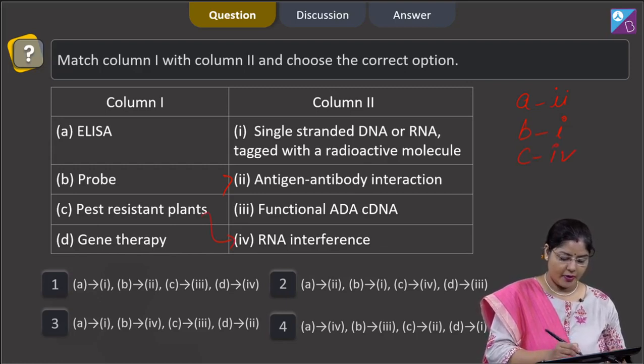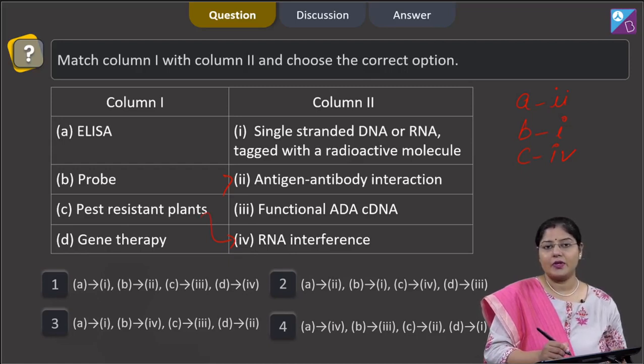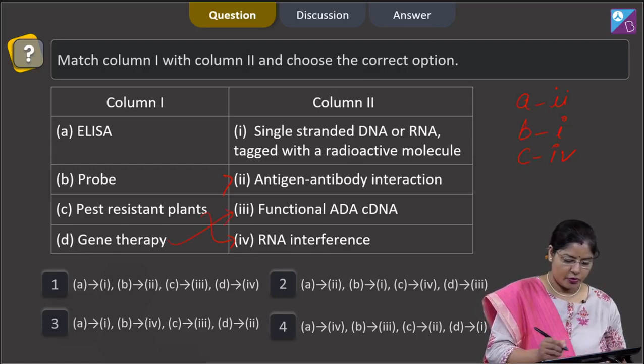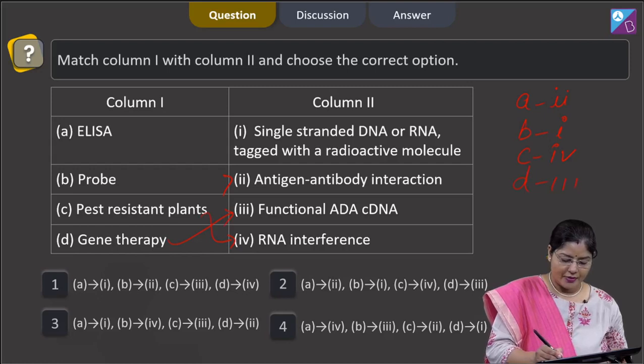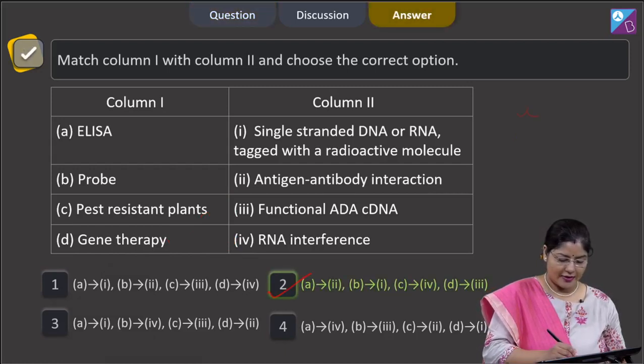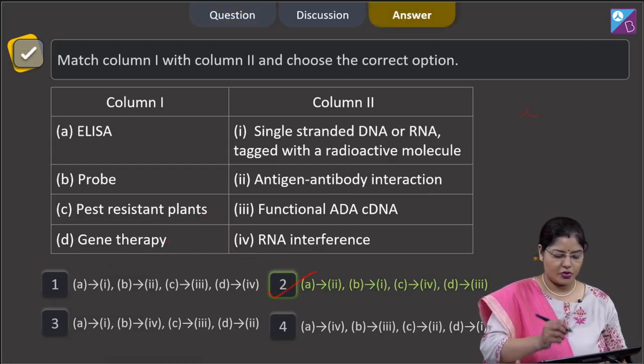Gene therapy matches with functional ADA cDNA. Functional ADA cDNA has been used for treating ADA deficiency, which is a genetic disease. So D matches with 3. Let us see, this combination is given in which option: A with 2, B with 1, C with 4, and D with 3. This is given in option number 2. So the correct answer to this question is option 2.